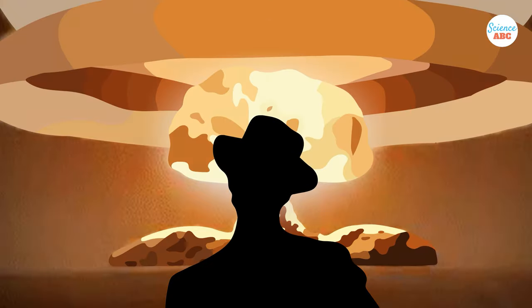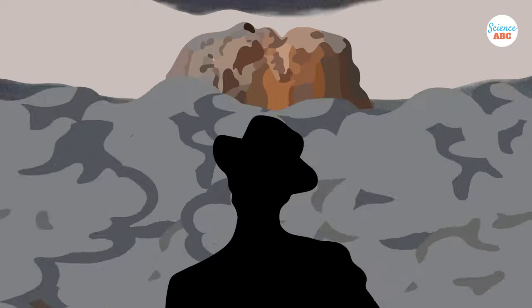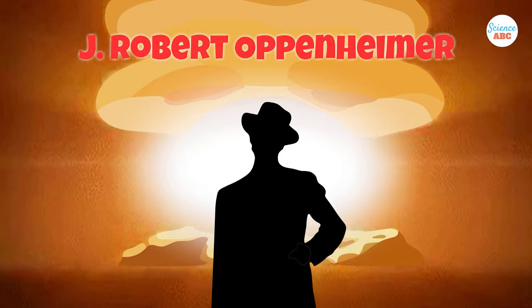This is the basic principle of how an atom bomb works. An atomic bomb can release more than 20 kilotons of TNT, and the man that made the bomb a reality was J. Robert Oppenheimer.